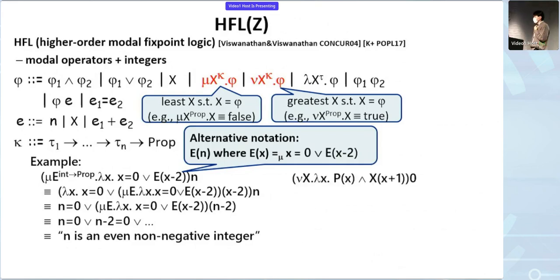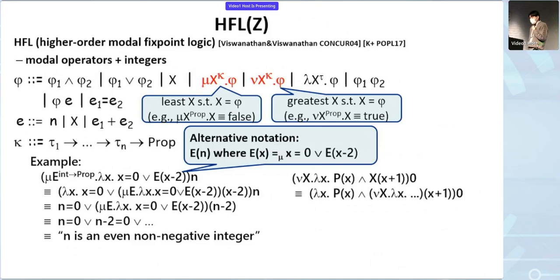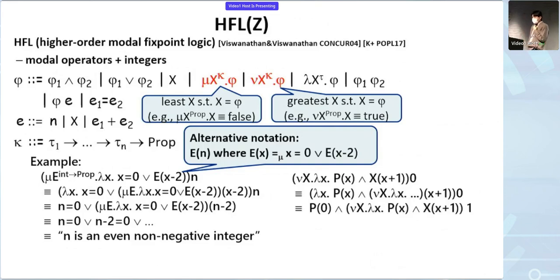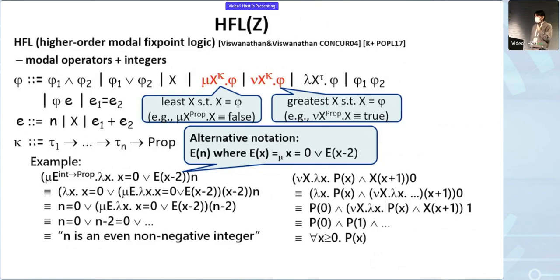Here is another example that uses the greatest fixed-point operator. By unfolding the fixed-point formula repeatedly, we get a formula meaning that p holds for any non-negative integer x. As you can see, although the primitive syntax does not include quantifiers, we can actually encode quantifiers by using least and greatest fixed-point operators.